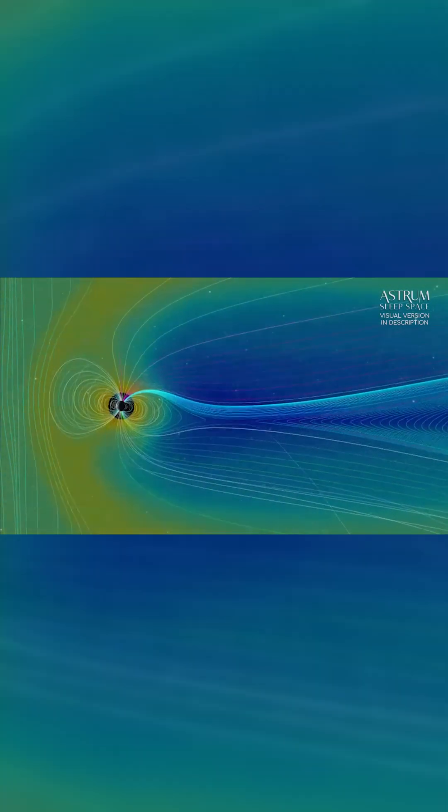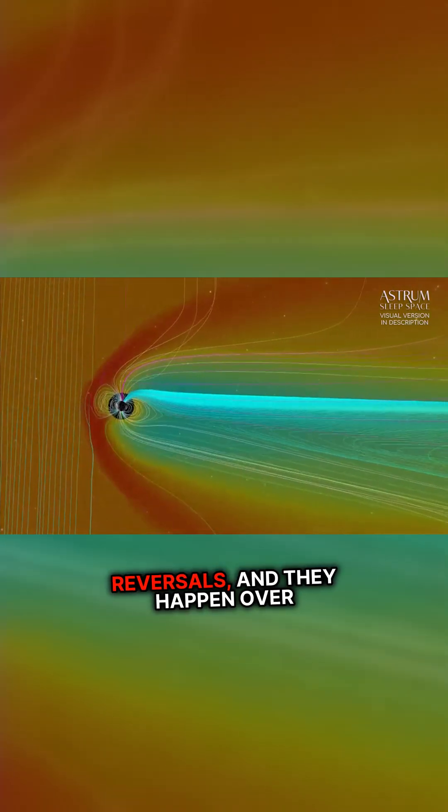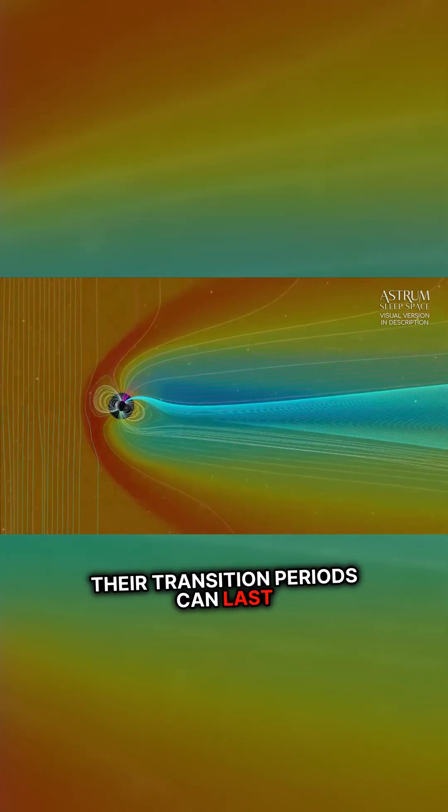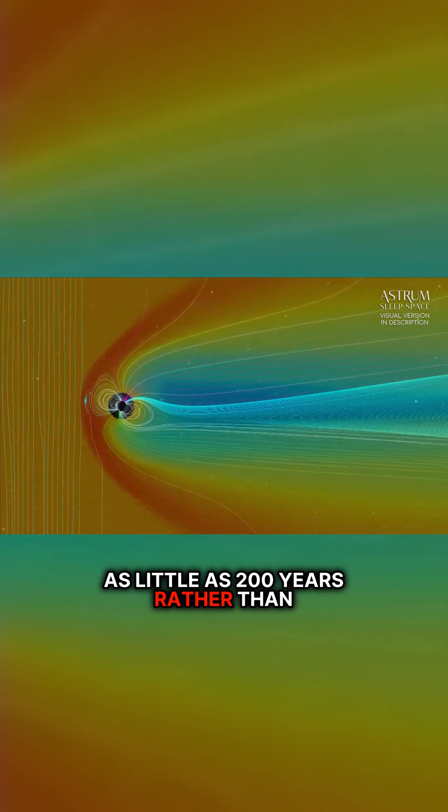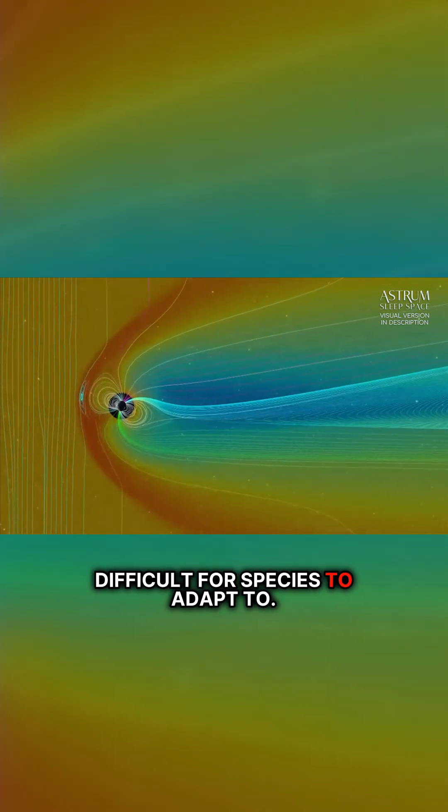Temporary wobbles like this are known as geomagnetic excursions rather than full reversals, and they happen over much shorter time frames. Their transition periods can last as little as 200 years rather than 10,000, which can be much more difficult for species to adapt to.